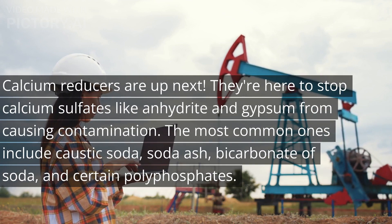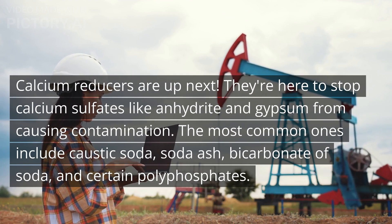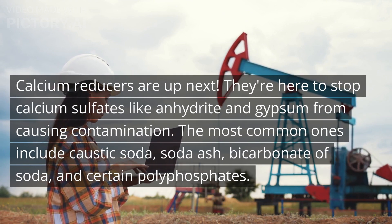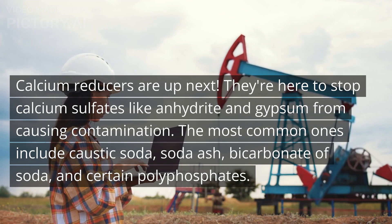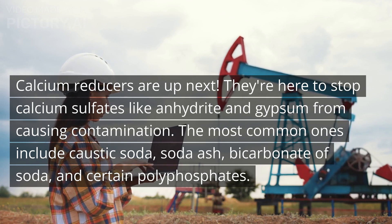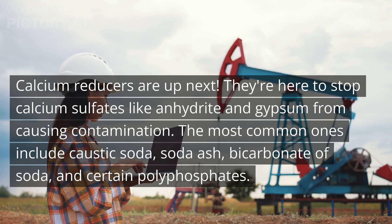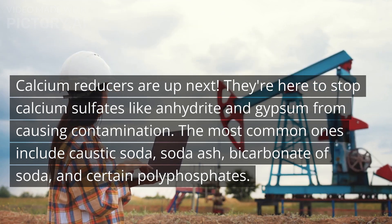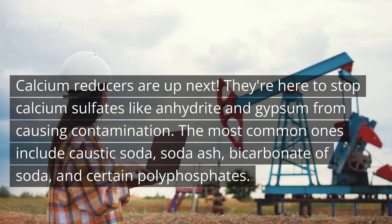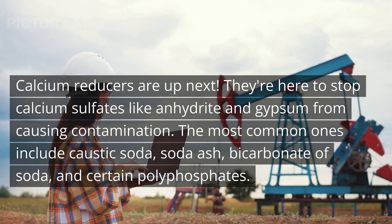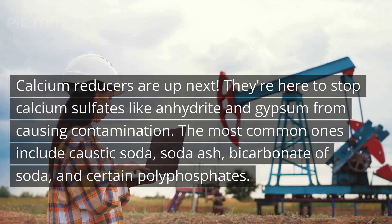Calcium reducers are up next. They're here to stop calcium sulfates like anhydrate and gypsum from causing contamination. The most common ones include caustic soda, soda ash, bicarbonate of soda, and certain polyphosphates.